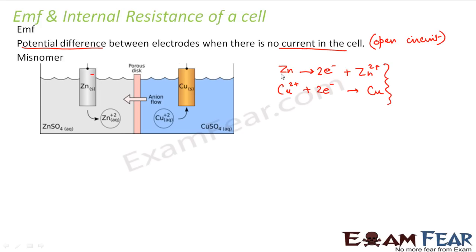Zinc wants to lose two electrons, but what is the intensity of that urge? For example, if I say I want to have an ice cream today evening, that tells me I want it — but how badly do I want it today itself? That intensity of the wish has to be defined. Similarly, the intensity of zinc's urge to lose two electrons and become zinc ion has to be defined.